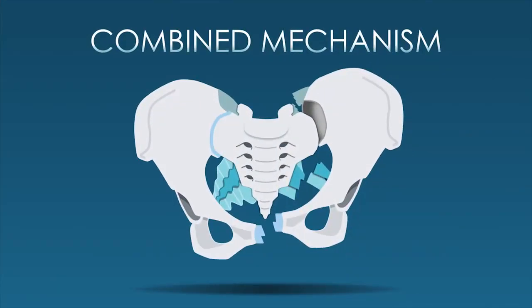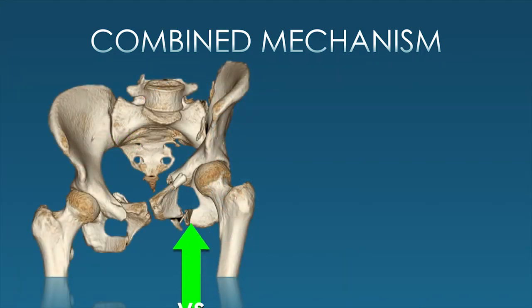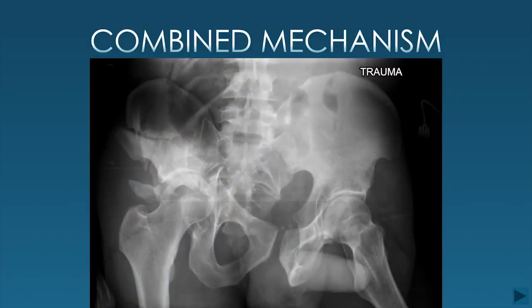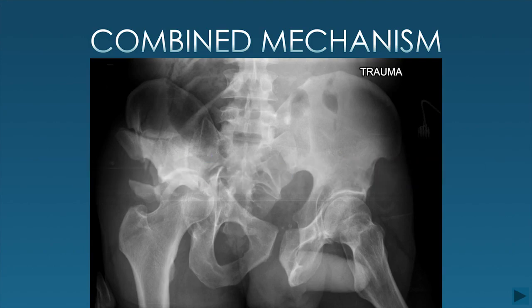Combined mechanism injuries, as the name suggests, have more than one dominant vector or really no dominant vector. These are typically reserved for co-dominant vectors where you'll see features of vertical shear but also clearly something else fitting another injury pattern, such as lateral compression. For example, vertical separation of the left hemipelvis with also a lateral compression on the same side with internal rotation. On the inlet view, lateral compression to the left hemipelvis with also an anterior-posterior compression force involved. Another example: lateral compression type 3 from the patient's right with windswept opening on the opposite side, but also with vertical separation—this we would call a combined mechanism.